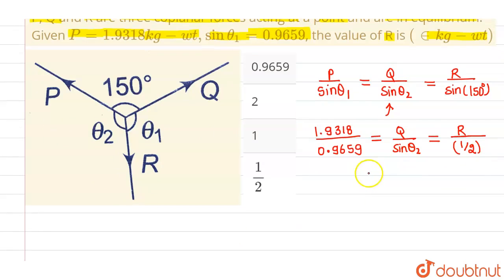So if I equate these two ratios, this first one and this last one, then I will be getting value of R equals to, this is nothing but 1.9318 divided by 0.9659 multiplied by 1 by 2. This is the value of R in kg weight.